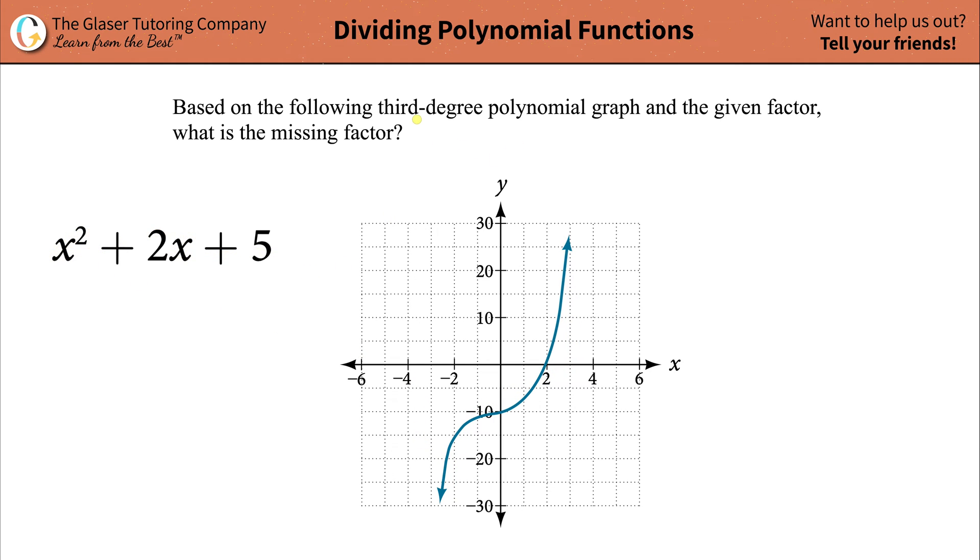So let's take a look at this problem. It says we have a third degree polynomial graph. In other words, this graph represents a third degree polynomial. And this factor that was given to us is a second degree. What that means is that the missing factor I know now must be a first degree polynomial function.